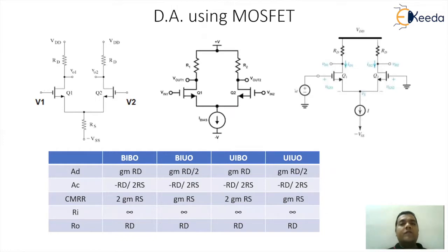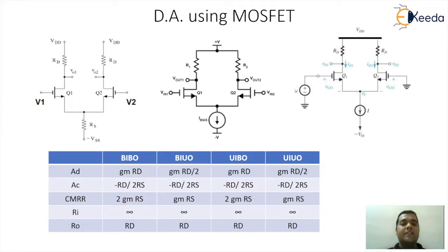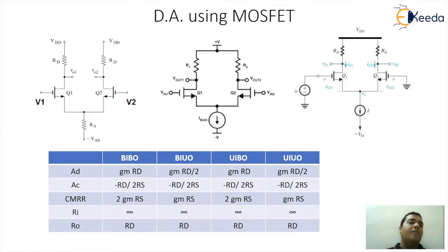We are going to see the differential amplifier using MOSFET. On the left-hand side circuitry you can see two MOSFETs Q1 and Q2, with input points V1 and V2 at the gate terminals. V1 is applied to the gate of the first MOSFET and V2 to the gate of the second MOSFET. Both sources are shorted together and connected to a single resistance RS, then to a lower negative potential minus VSS. At the top, there are two resistances RD for Q1 and RD for Q2, both connected to VDD.